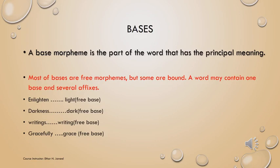Let's take some examples of free bases. For example, the word 'enlighten.' Enlighten consists of three morphemes: en, light, and en. Which one is a free morpheme and which one is a bound morpheme? Certainly, light is the free morpheme — it has a meaning in isolation, it can stand alone with meaning. So it is a free morpheme. The first en and the last en are bound morphemes because they cannot stand alone with meaning. So we have bound, free, and bound morphemes.